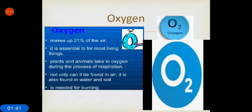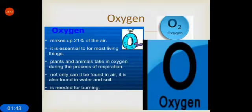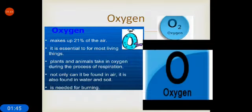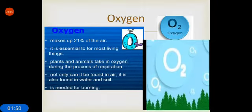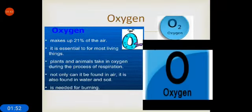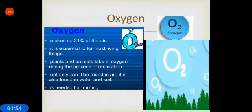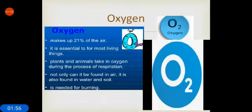Oxygen makes up 21% of the air. It is essential for most living things. Plants and animals take in oxygen during the process of respiration. Not only can it be found in air, it is also found in water and soil. It is needed for burning.